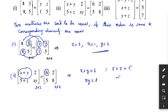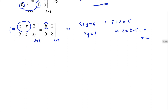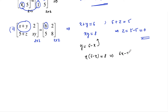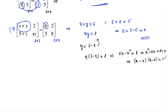From 5 plus z is equal to 5, we get z is equal to 0. Since x plus y is equal to 6, we can write y is equal to 6 minus x. Substituting into x times y is equal to 8 gives x times (6 minus x) is equal to 8, which implies 6x minus x squared is equal to 8, or x squared minus 6x plus 8 is equal to 0. Factoring gives (x minus 4)(x minus 2) is equal to 0.